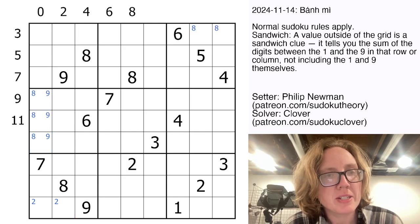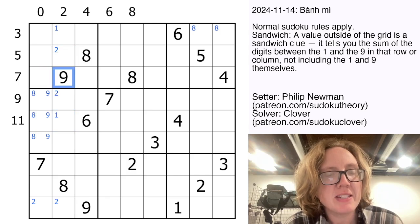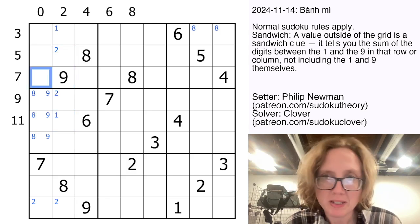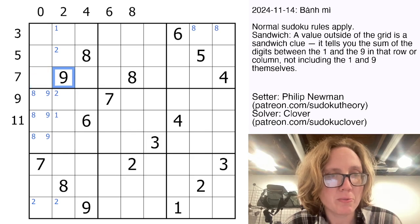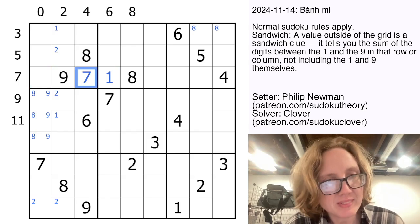So this two here tells me that one is going to be in one of those cells and two is going to be on one or the other side of it. Seven here. Okay, so the one can't be here because that would give me a total of zero. So the one has got to be over here with a seven in the middle.